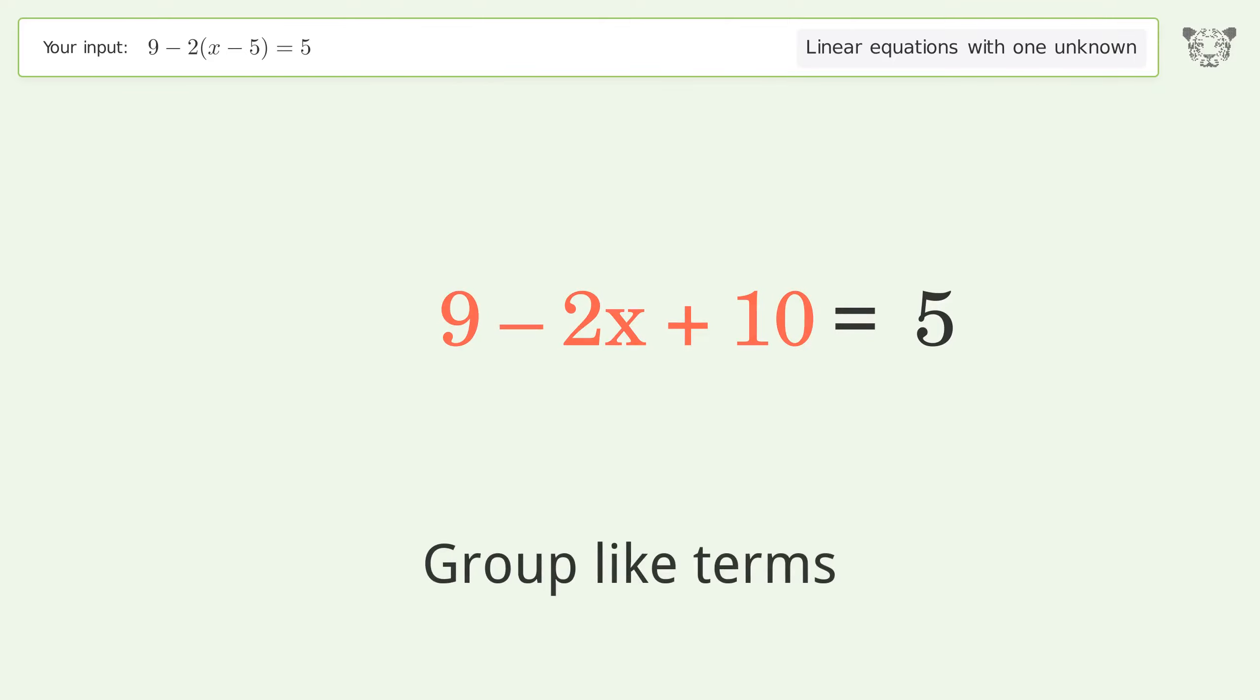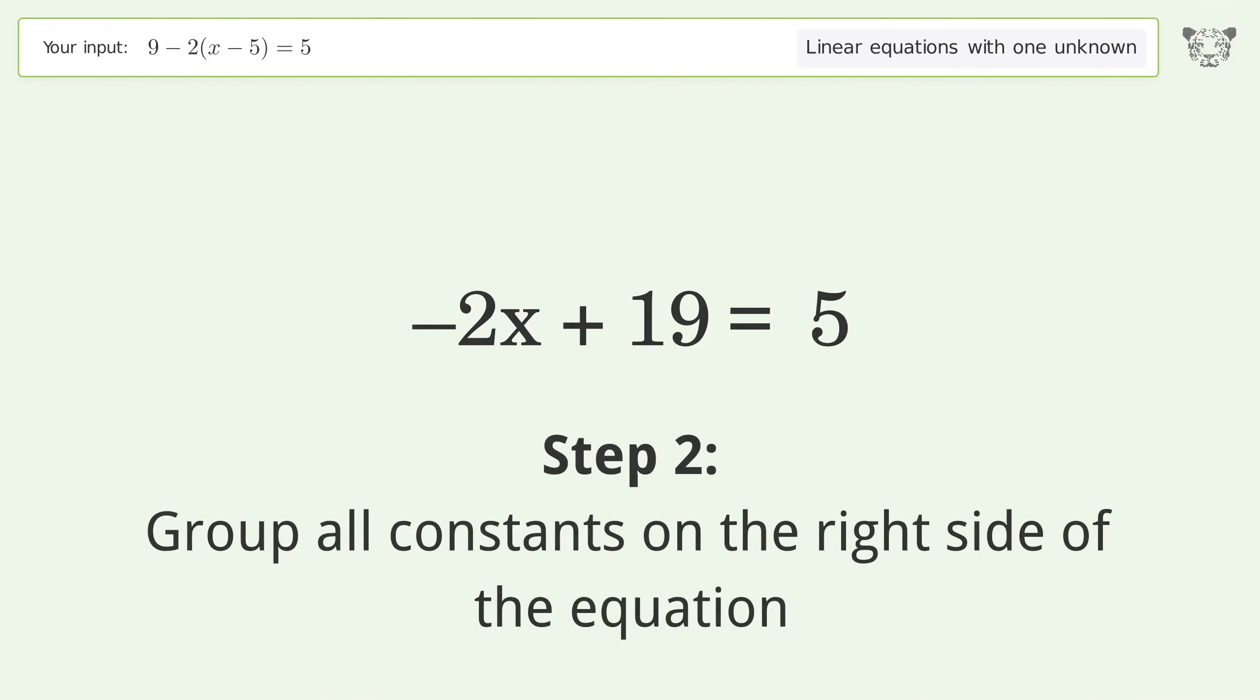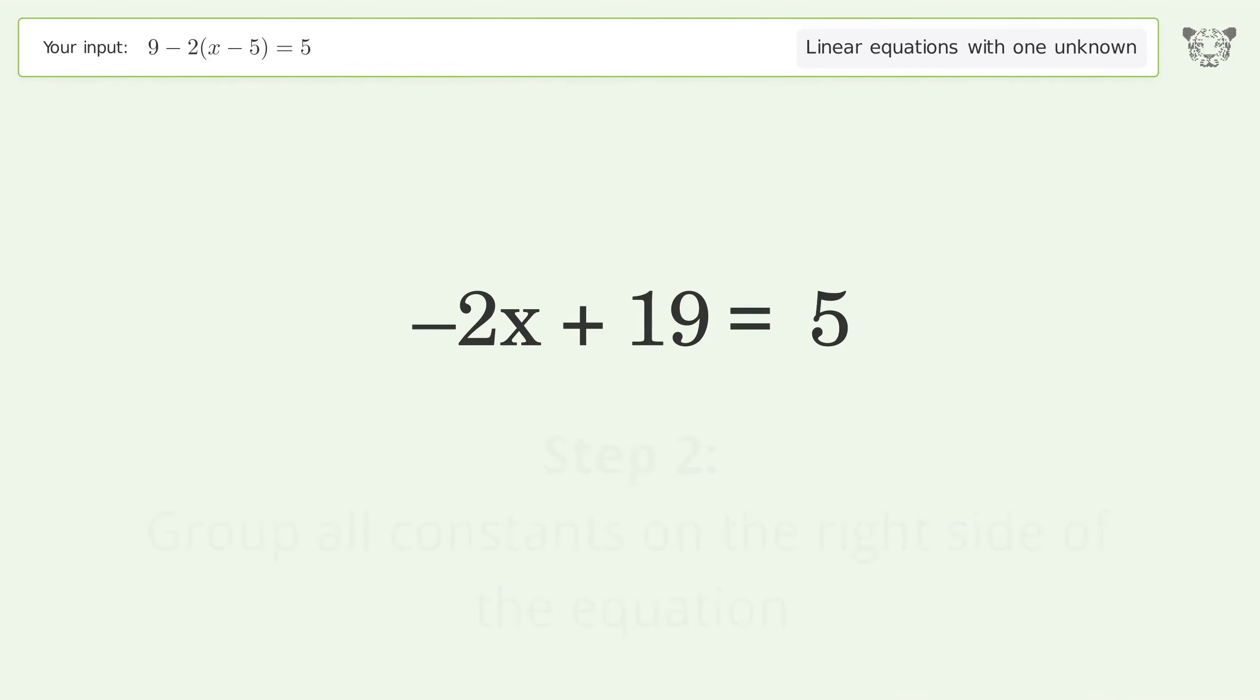Group like terms, simplify the arithmetic. Group all constants on the right side of the equation. Subtract 19 from both sides, simplify the arithmetic.